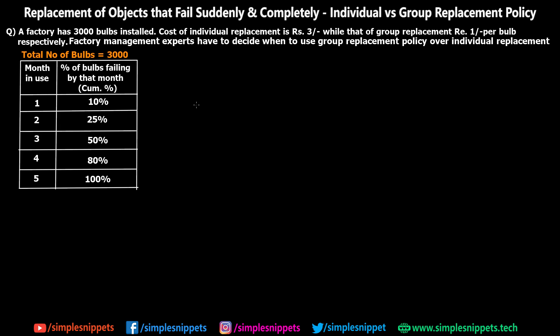So let's actually read the numerical and understand what's happening. A factory has 3000 bulbs installed. The cost of individual replacement is ₹3 per bulb, while that of group replacement is ₹1 per bulb. So whenever one bulb fails and you're replacing it individually, you pay ₹3. However, when replacing all 3000 bulbs together you are charged ₹1 per bulb, meaning you will only pay ₹3000 total. The factory management experts have to decide when to use group replacement policy over individual replacement policy.